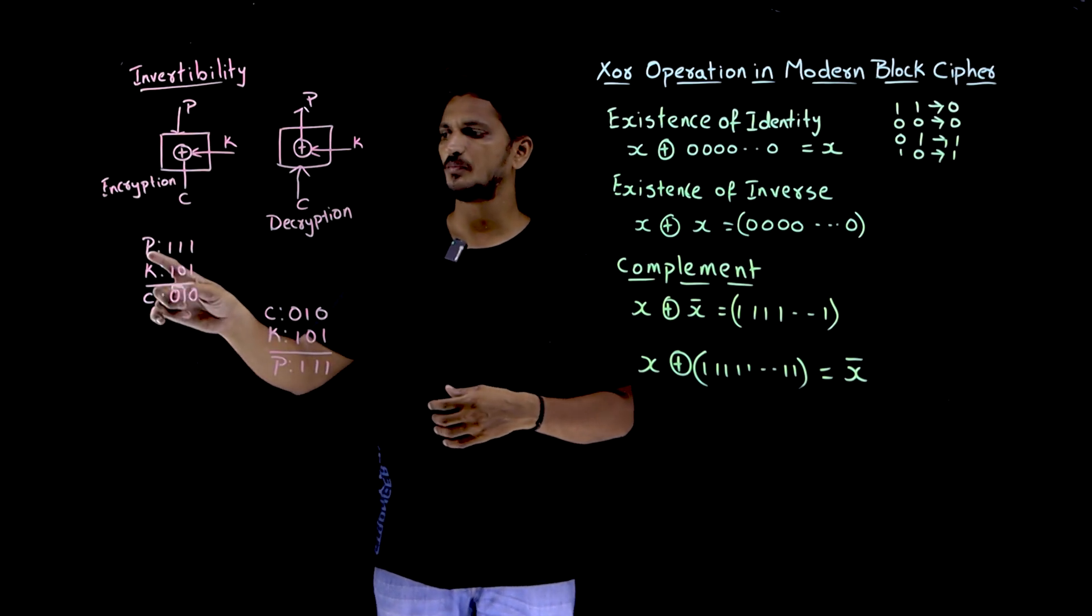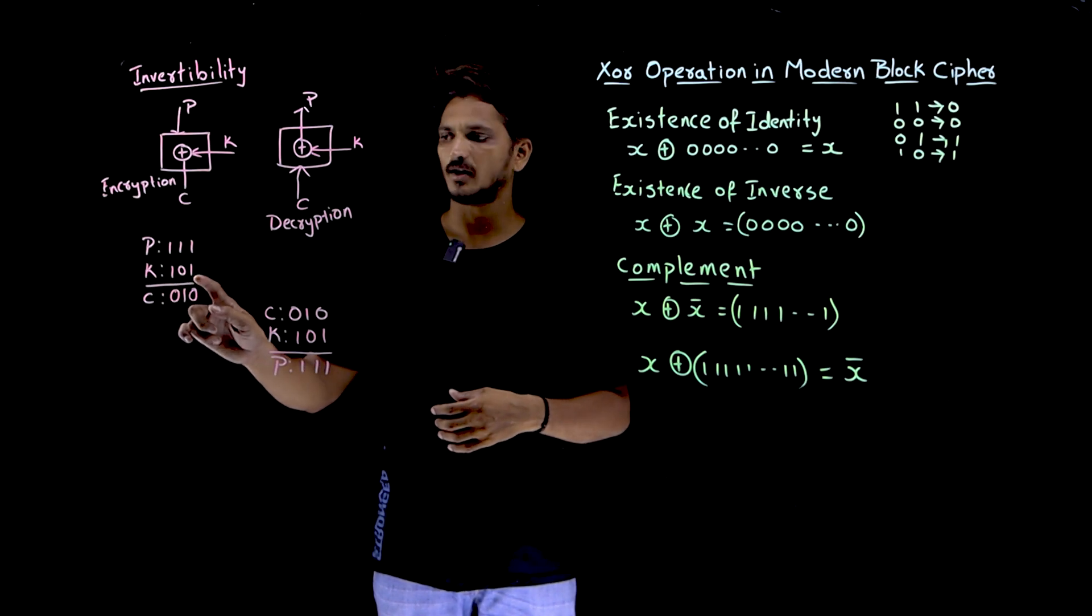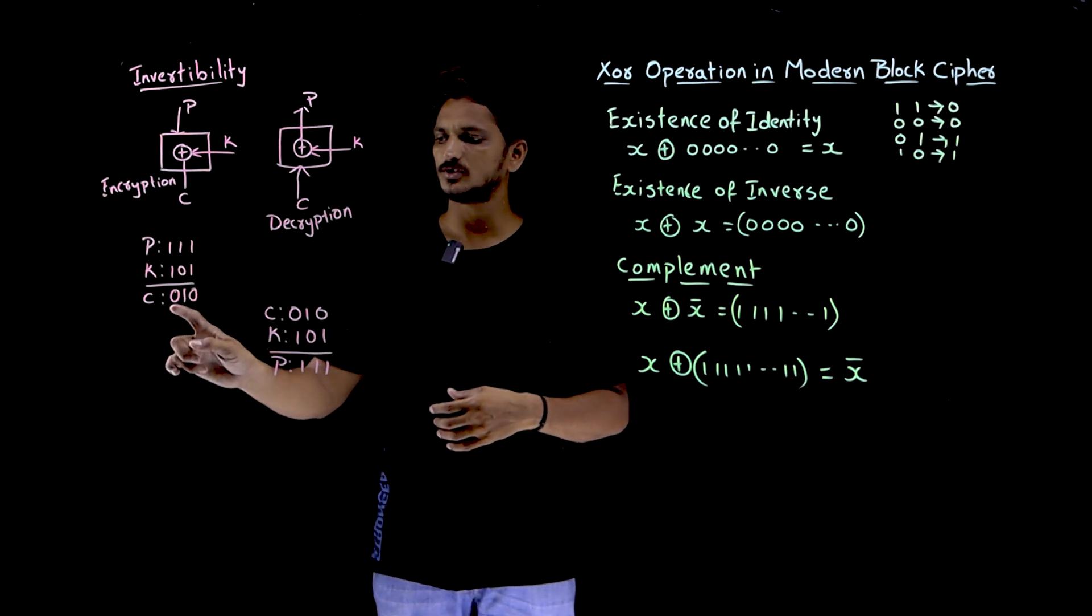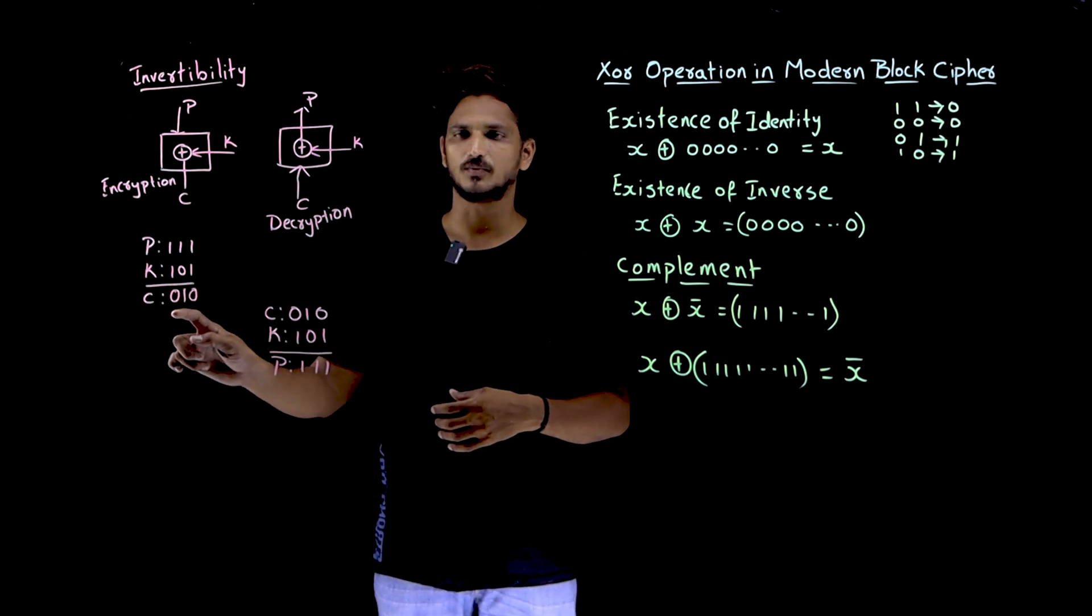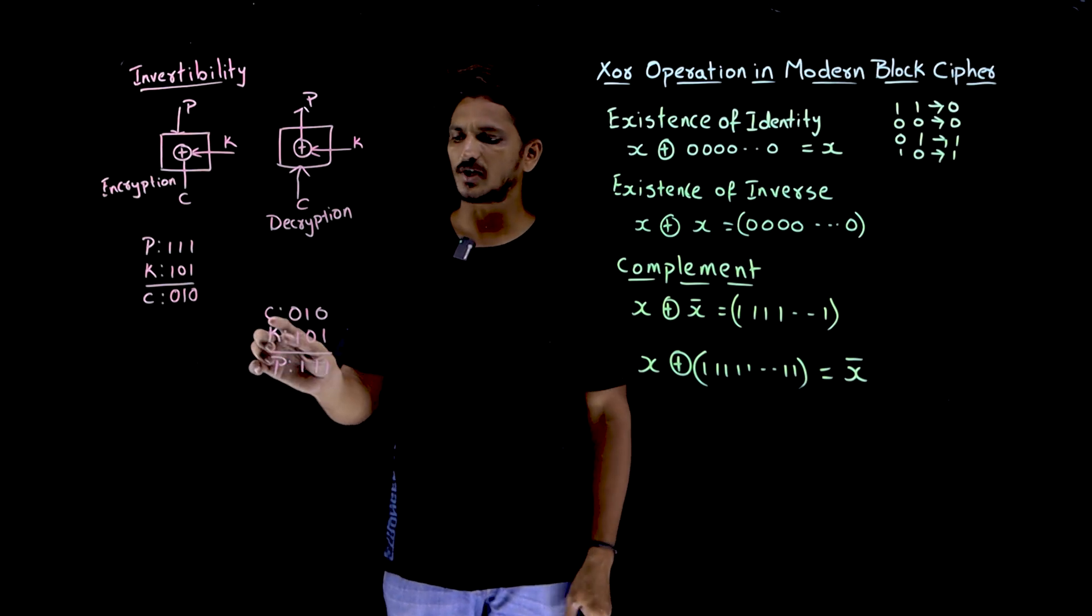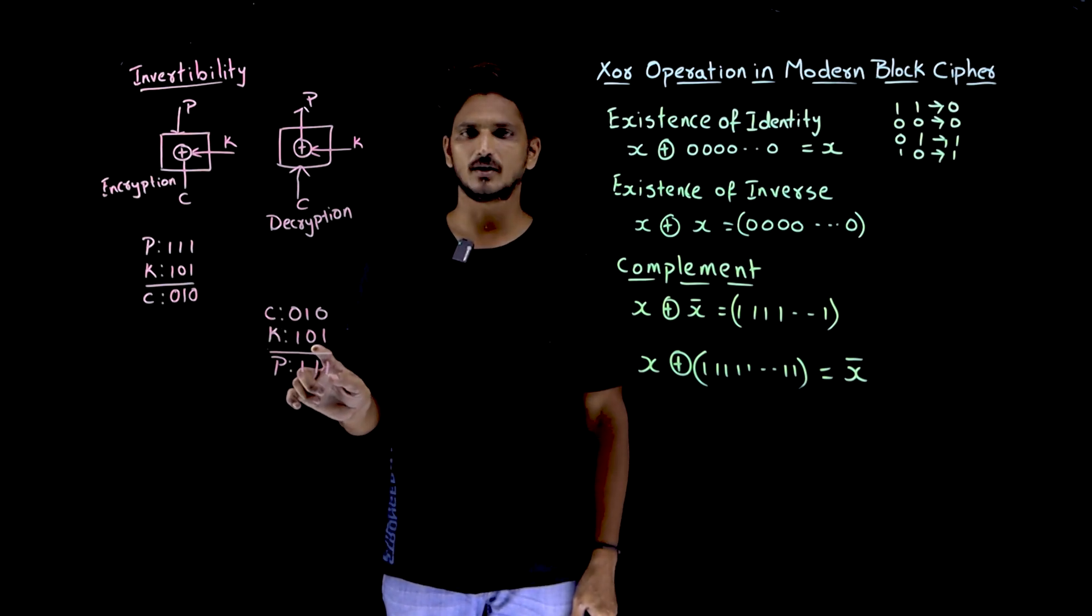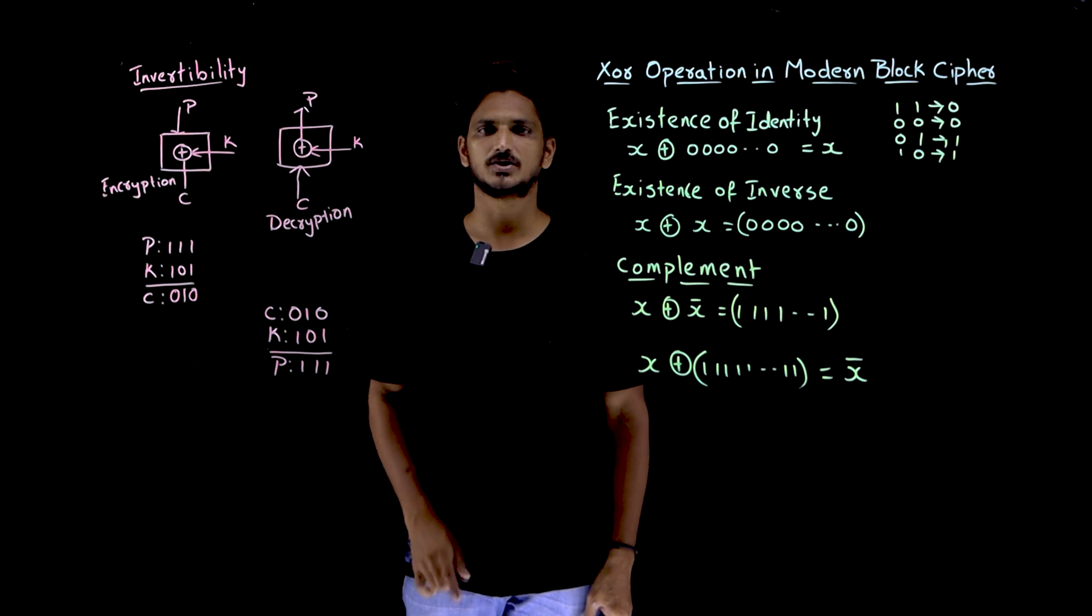Let us take an example, plain text P 111, if you take key as 101, XOR is 2, you are going to get 010. 11 means 0, 10 means 1, 11 means 0. So this is the cipher text which we are going to get. If you use cipher text and apply key, do the XOR operation, 01 means 1, 10 means 1, 01 means 1. You are going to get the plain text.